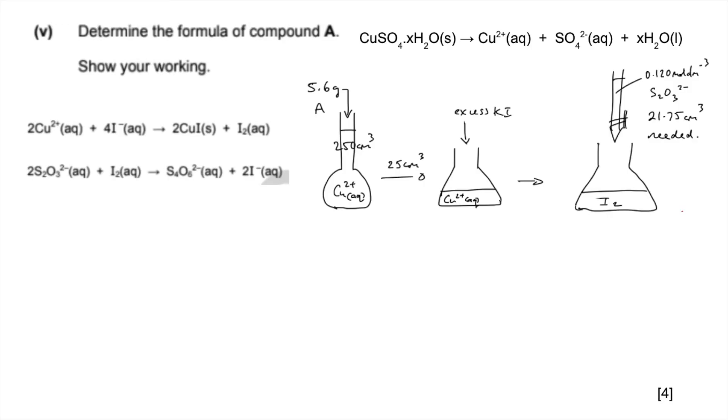First, we work out the moles of thiosulfate used in the titration. The mole ratio in this equation tells us how many moles of iodine are present. The iodine in the titration is the iodine generated when the excess KI was added. That's half as many as the moles of thiosulfate. From the mole ratio in this equation, we double it back up again to get 2.61×10⁻³. That's the moles of Cu²⁺ in here.